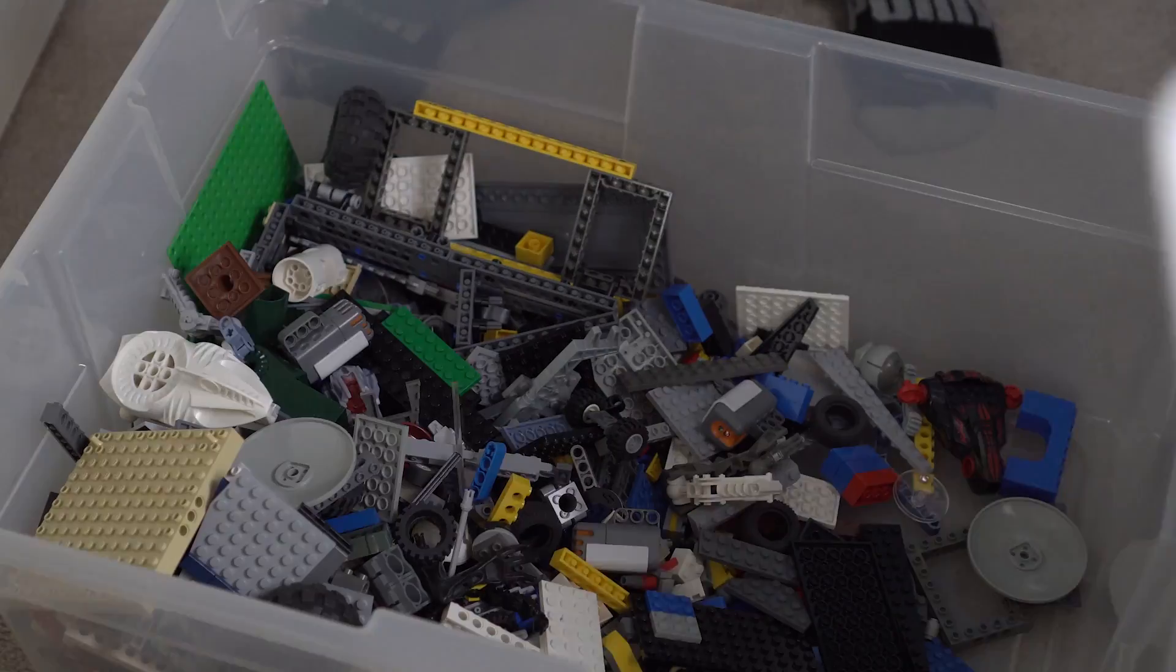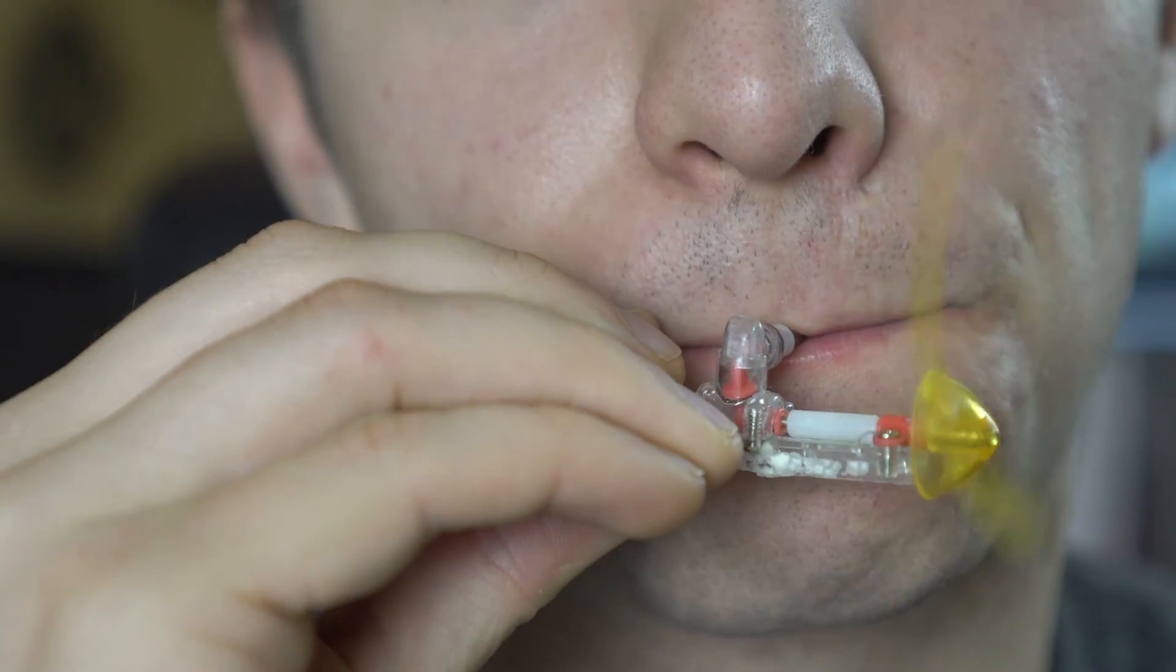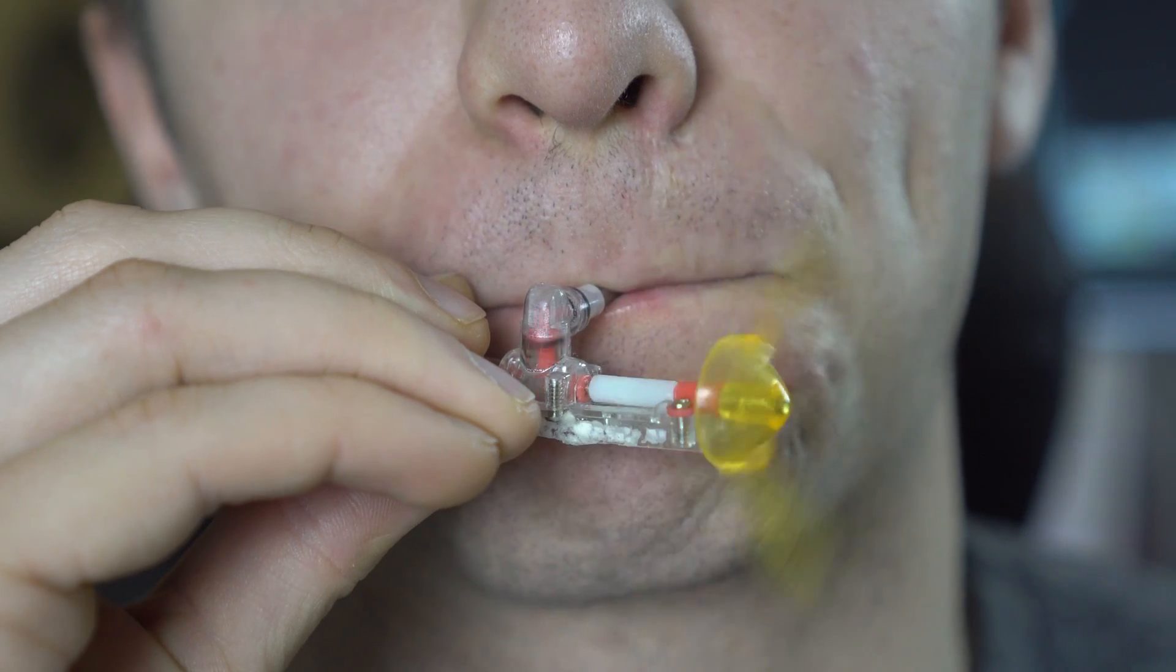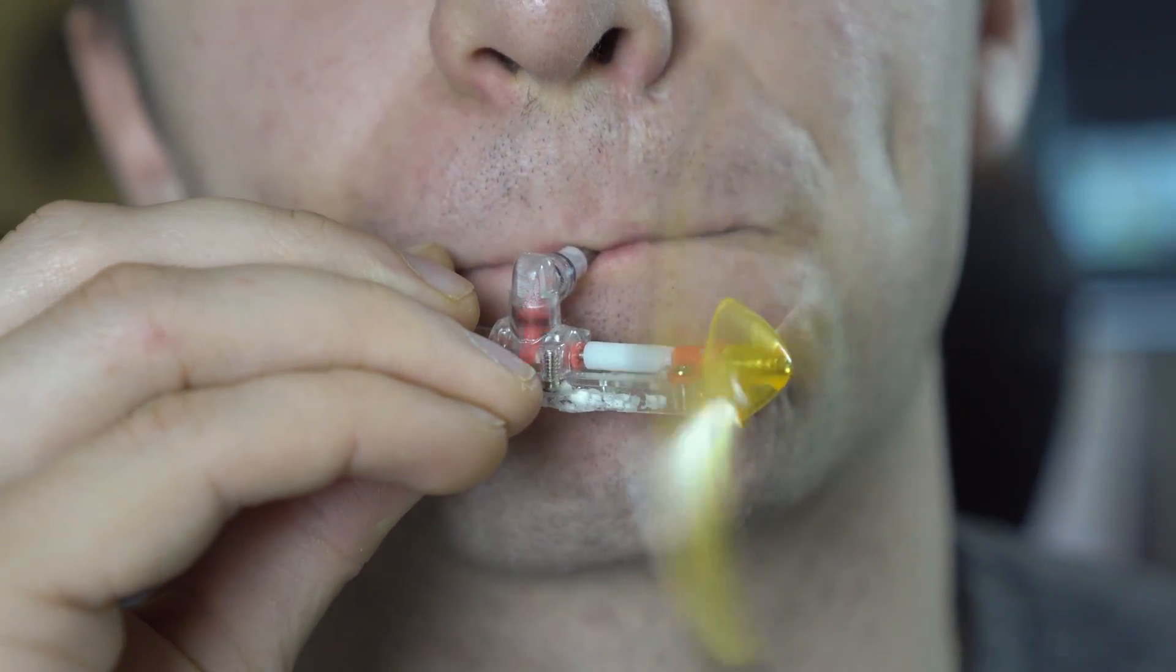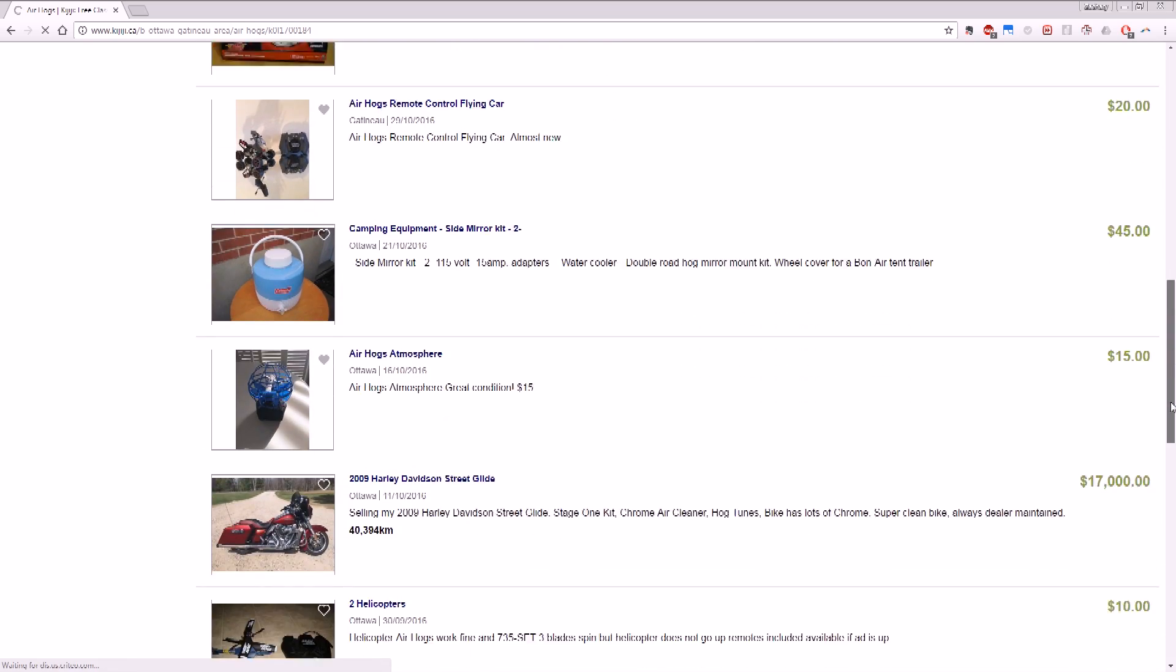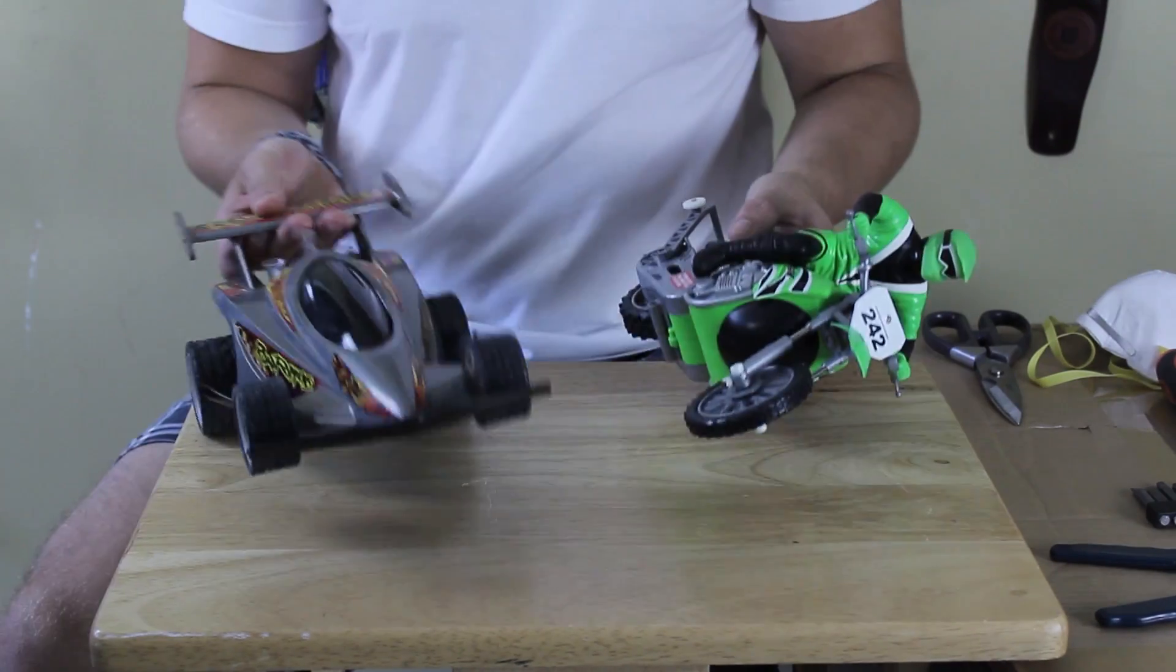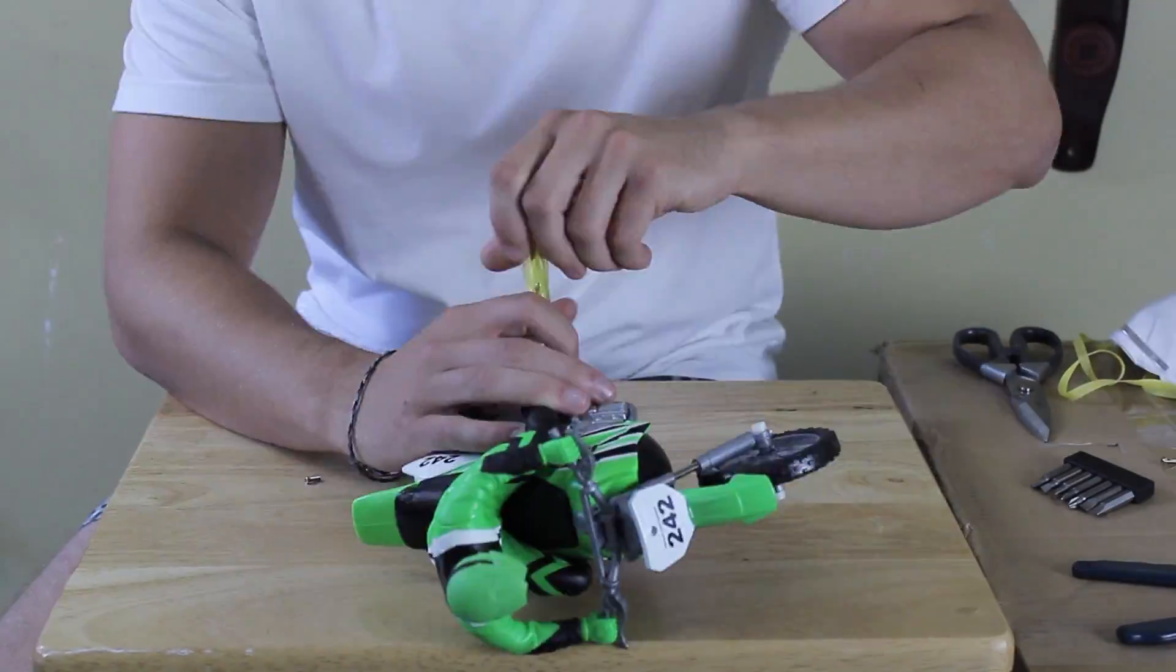Now fast forward eight years and I have this same urge to play with some pneumatics again. So what do I do? I look on Kijiji to see if anyone's selling pneumatic engines, and slowly I start to accumulate old Air Hogs toys. And unfortunately they don't make them anymore which is kind of disappointing. Everything now is electric which is also disappointing. So now I have all these Air Hogs toys and the next step is to take them apart and isolate the motor from the rest of the vehicle.